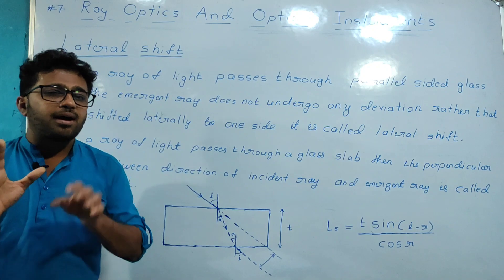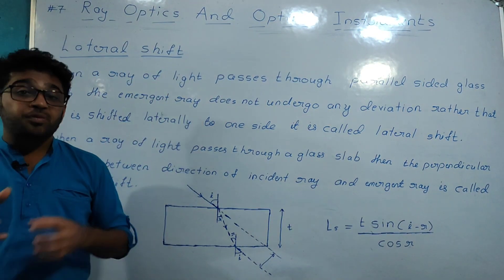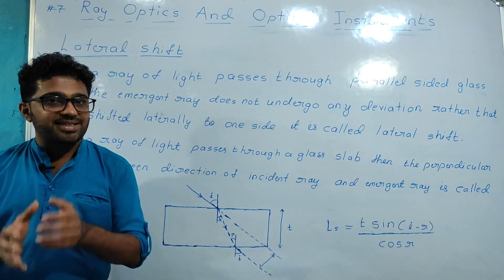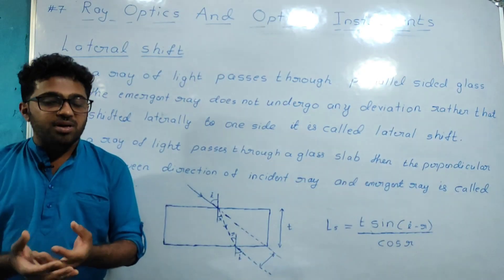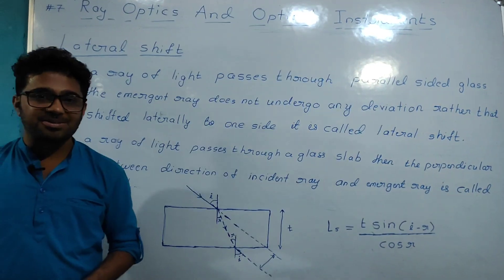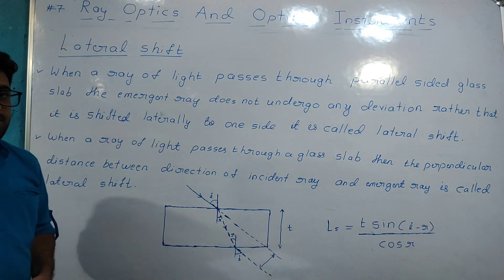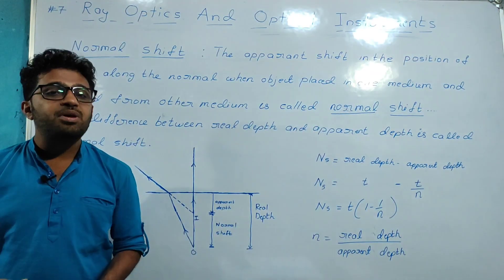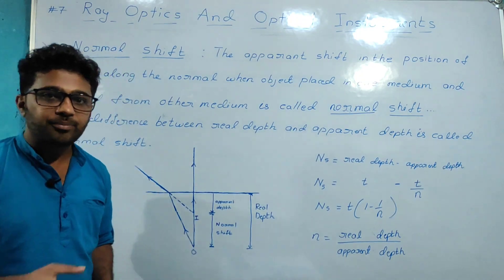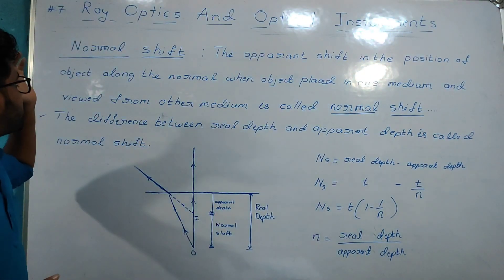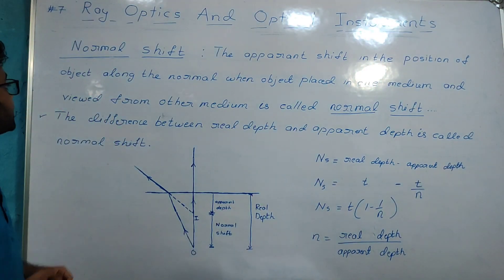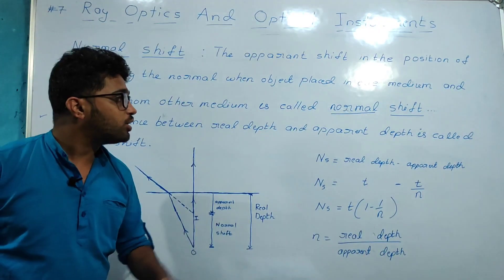Now let us study normal shift. The apparent shift in the position of an object along the normal, when the object is placed in one medium and viewed from another medium, is called normal shift. For example, you can use two different media such as air medium and water medium.